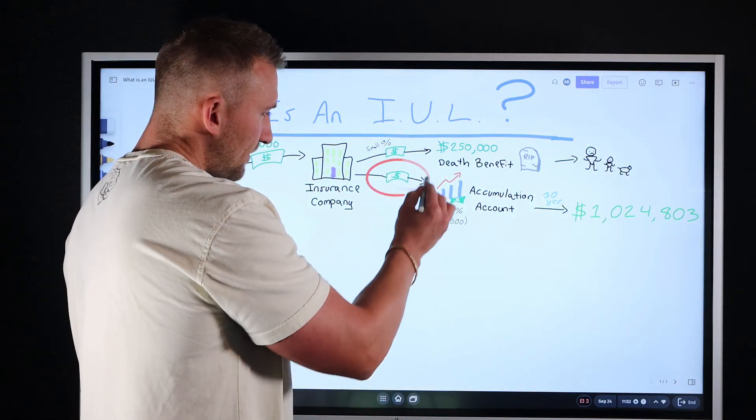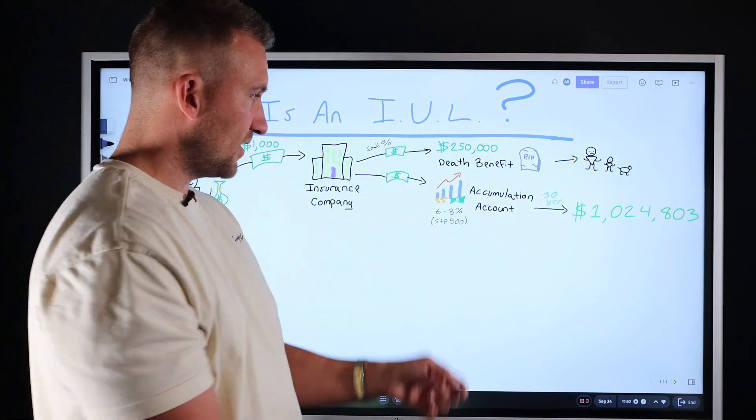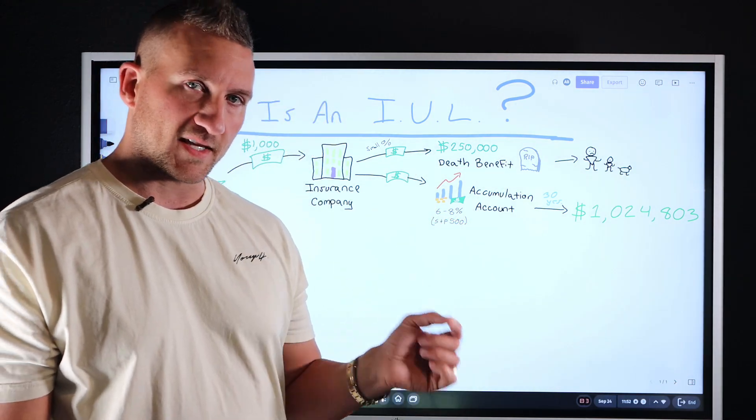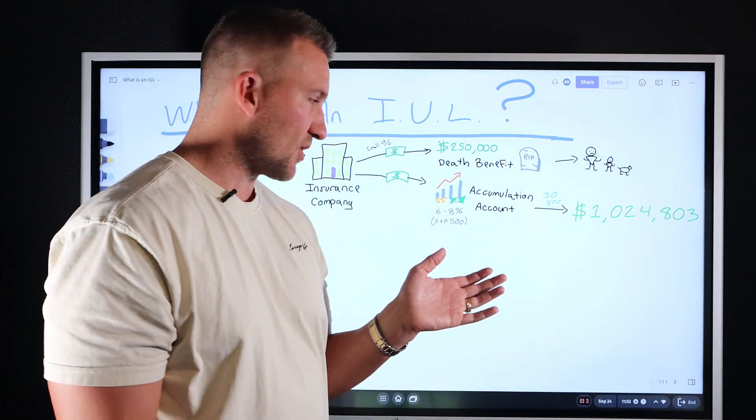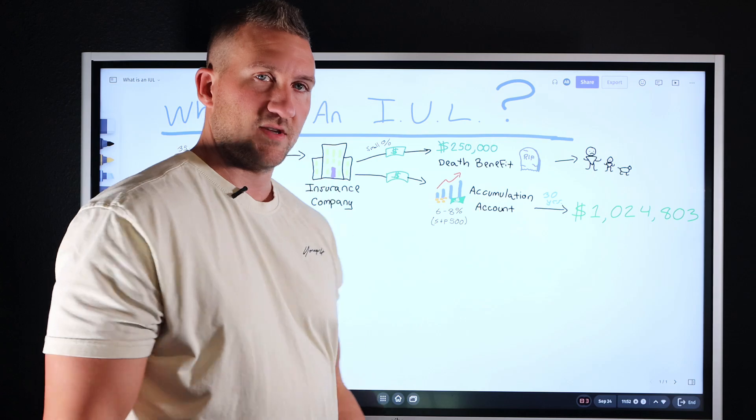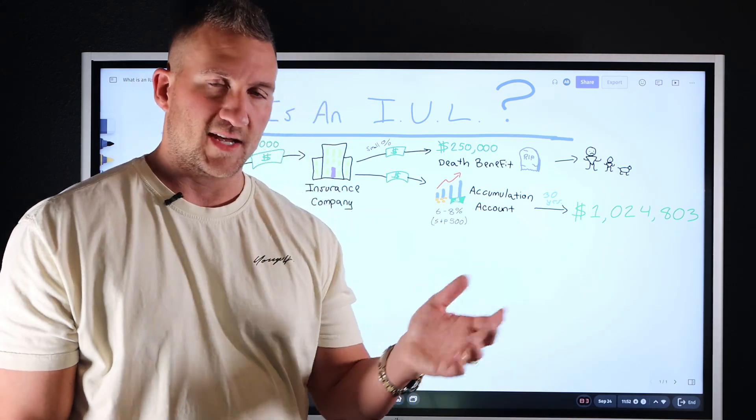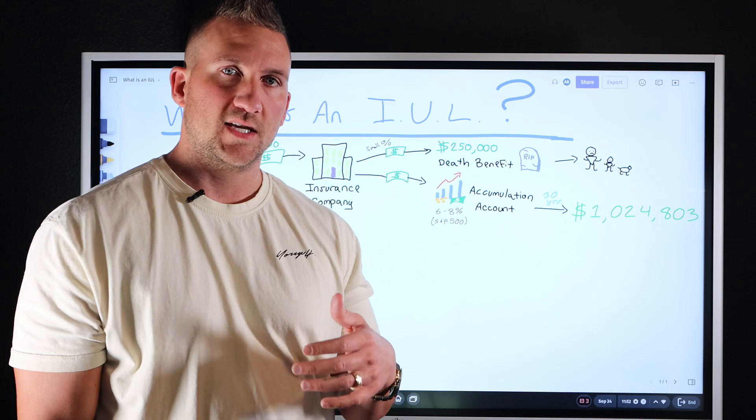The remaining amount of his funds drop into an account known as an accumulation account. This is an account that is linked to a stock market index, such as the S&P 500. Okay, Moody's, Barclays, Nasdaq, Morgan Stanley, something like that.